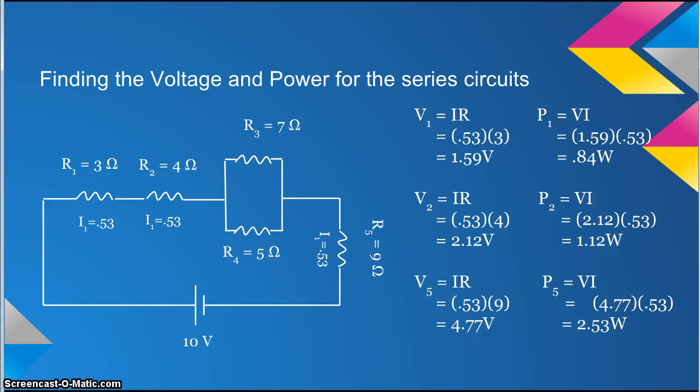You use that voltage and multiply it by the current, which is 0.53, to get P1, which is 0.84.